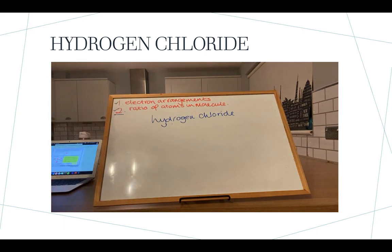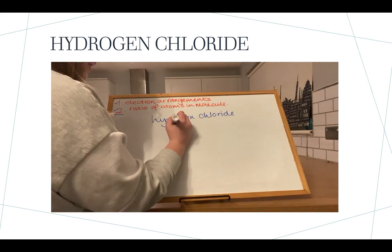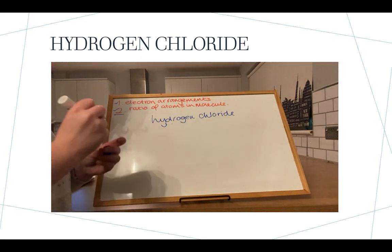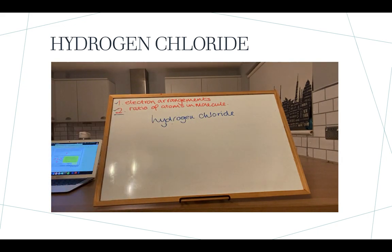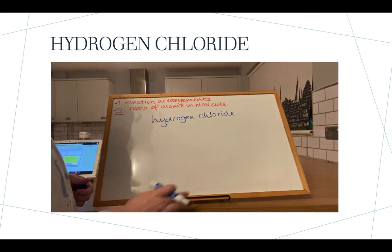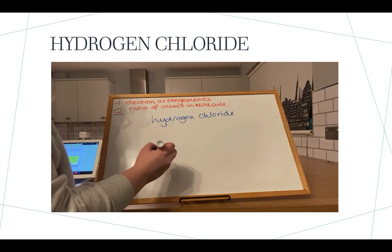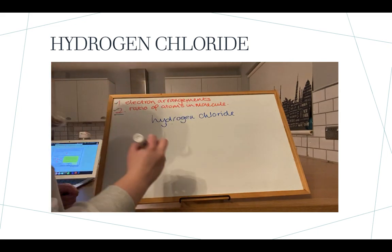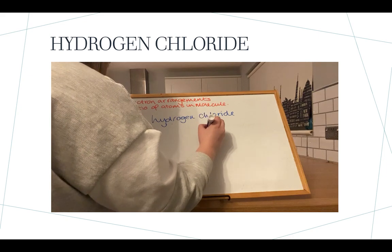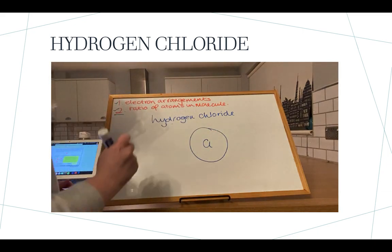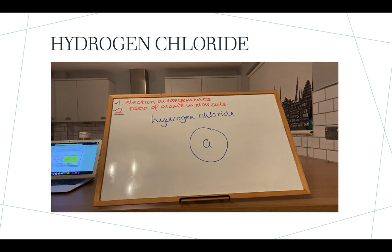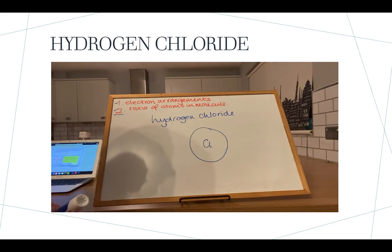Hydrogen chloride is made up of hydrogen and chlorine. In one molecule, we have one hydrogen atom and one chlorine atom. I'm going to start with chlorine — and I'll show you why. When we're doing bonding diagrams, the only electrons you have to draw are the outer electrons on your atom.